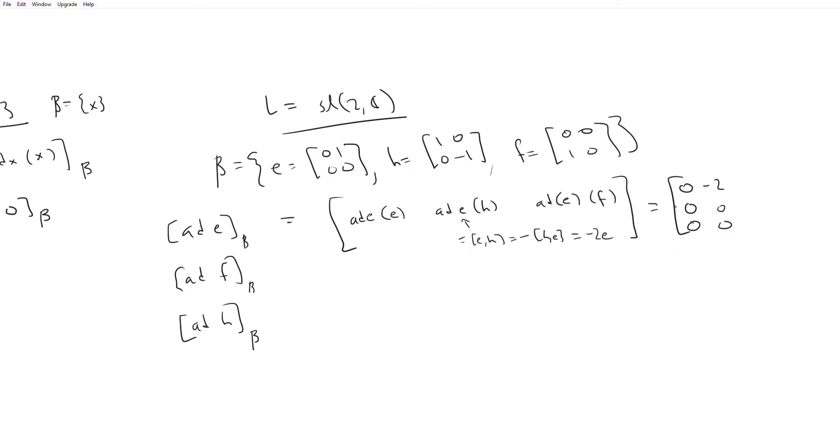And then lastly, E bracket F is just H, so you get 0, 1, 0. And similarly, you can do the other things for the other matrices. And so that's what the adjoint looks like as a linear operator on SL2C. And so you can determine the image under the adjoint of any arbitrary vector by writing it as a linear combination of E, H, and F. And say if you wanted the image of ad(E), you just add it like this. So I hope that elucidates what's going on here.